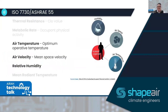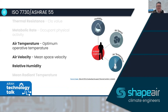I'm going to concentrate on the elements of comfort criteria — the air temperature, the air velocity, and the relative humidity. For the purpose of this presentation, we're going to assume the relative humidity is within our range at 45%.